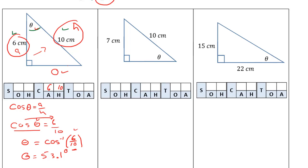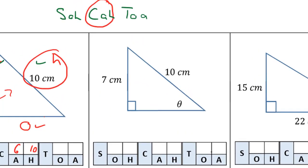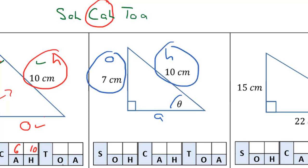Let's take a look at the second question. Our angle is down in this bottom corner here, so that means the opposite is over here, hypotenuse is here, and adjacent is here. We are given information about the opposite and the hypotenuse. We don't have any information about the adjacent, so that means we are using the trig function that combines opposite and hypotenuse, which in this case is going to be sine.